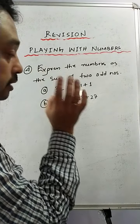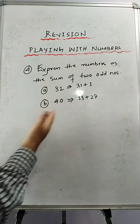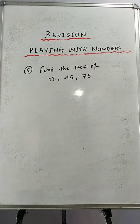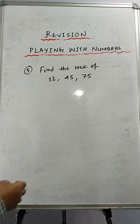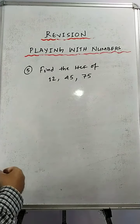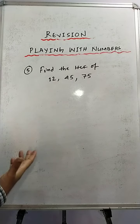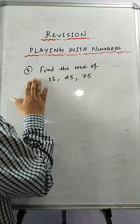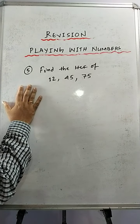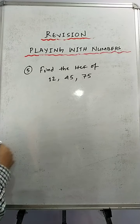Their sum is equal to 32. This type of sums can come in the examination. Now let's move on to sum number 5 — another very important question. Find the HCF of all three numbers. I know that most of you know this, but consider this type of sums — all the sums I am doing are very, very important. Now 12 — this will be the prime factorization individually.